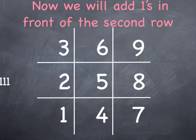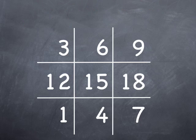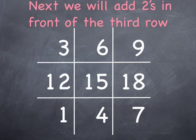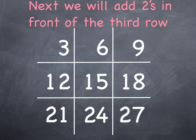We'll start by adding ones in the second row. In front of the 2 put a 1, in front of the 5, and in front of the 8. And then in the third row we're going to put 2's in front of the 1, in front of the 4, and in front of the 7.